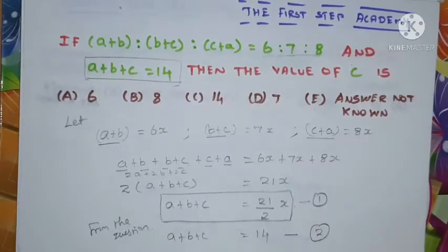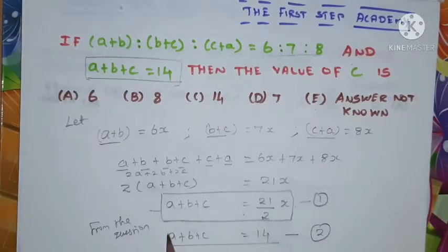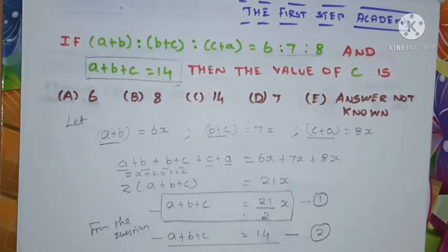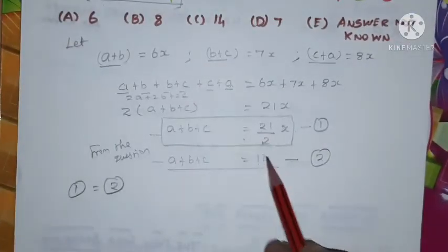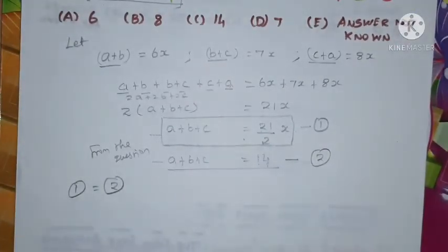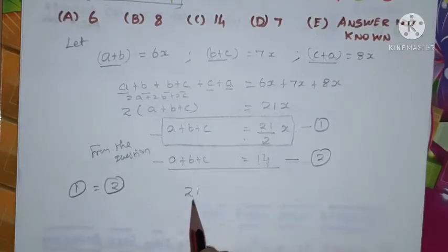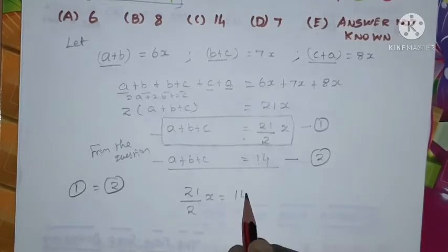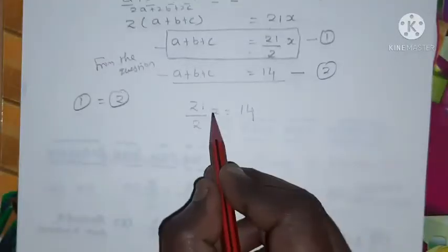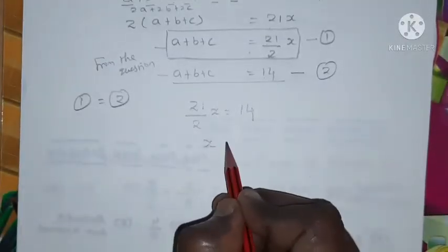Comparing equation 1 and equation 2: the left-hand sides are equal, so automatically the right-hand sides are also equal. By equating: 21x/2 = 14.